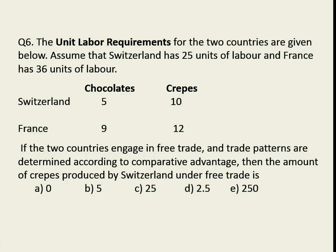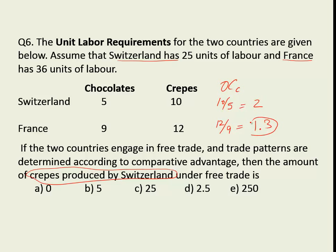This question asks: two countries open up to free trade — does Switzerland produce scraps, and how much? First, we want to know if Switzerland produces scraps at all, so we need the opportunity cost. If not specified, we assume the two countries are large and of relatively equal sizes. The opportunity cost is 10 divided by 5 for Switzerland, which equals 2, and 12 divided by 9 for France, which is approximately 1.33. France has a lower opportunity cost of producing scraps, so France specializes in scraps and produces zero chocolates, whereas Switzerland specializes in chocolates and produces zero scraps. So the answer is A.